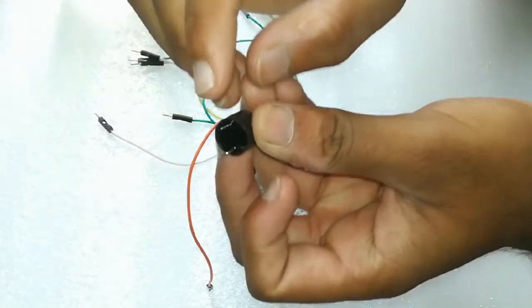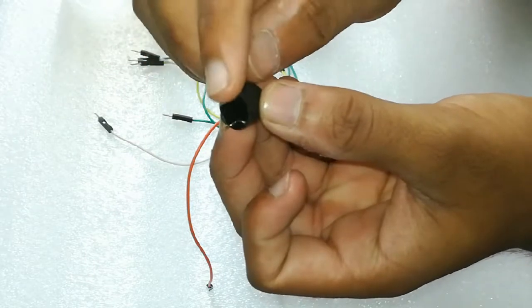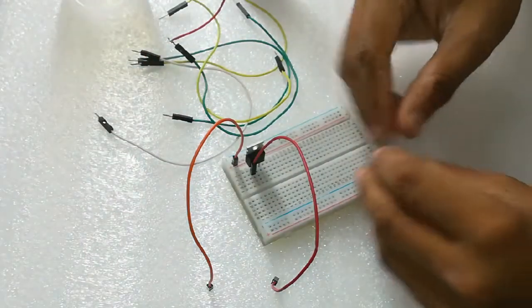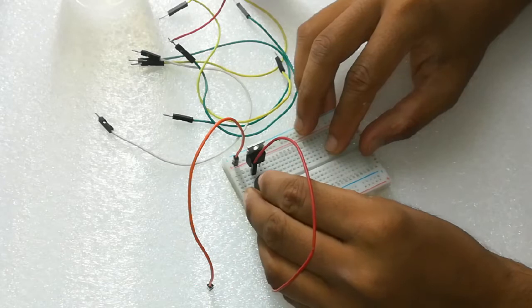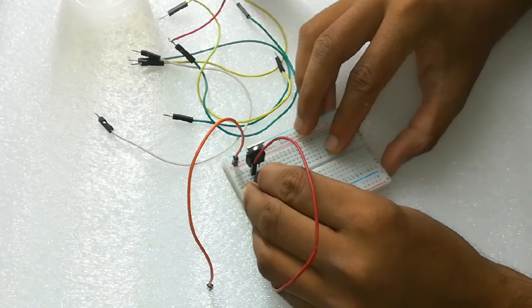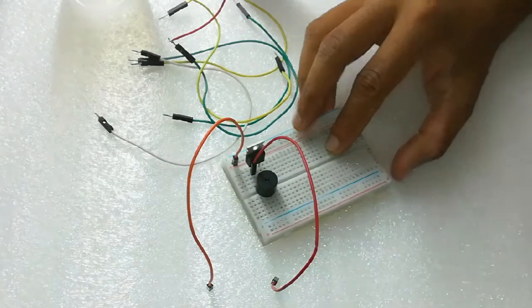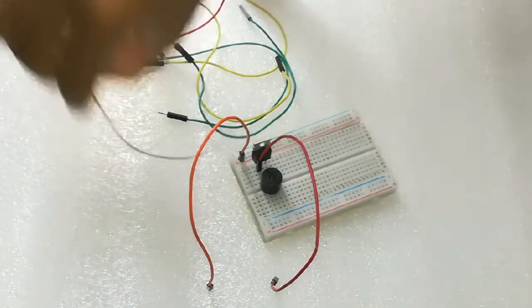Now, this is a buzzer. It has two terminals, positive and negative. Smaller one is negative. We will connect the smaller one in the drain, meaning in the second row of MOSFET, and positive in the other side.